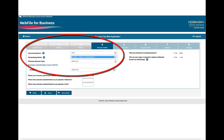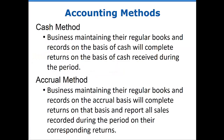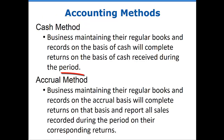Section 4, Business Details. The accounting basis is how sales and expenses are recorded for your business. Businesses maintaining their regular books and records on the cash basis will complete returns on the basis of cash received during the period, provided this basis clearly reflects the operations of the business. Businesses maintaining regular books and records on the accrual basis will complete returns on that basis and report all sales recorded during the period of their corresponding returns.